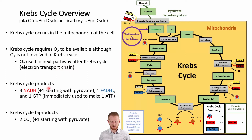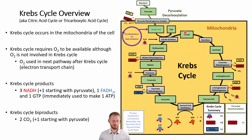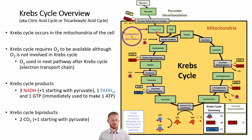The Krebs cycle goes through all its steps in a circle, which is why it's called a cycle. One full cycle produces three NADH molecules. If you are starting with glycolysis and contributing pyruvate, it must go through the pyruvate decarboxylation process to become acetyl-CoA, which produces another NADH molecule. So three plus one gives you four NADH molecules per pyruvate molecule that goes into the Krebs cycle.